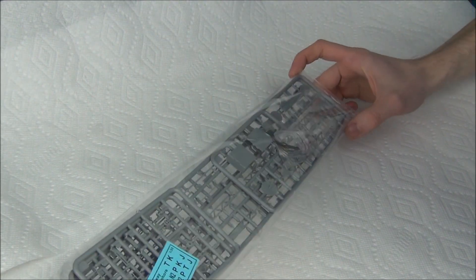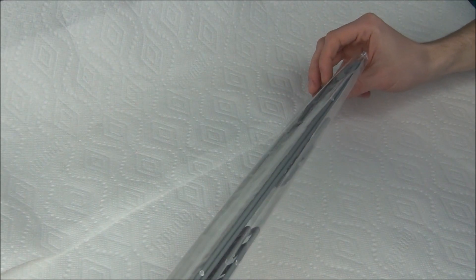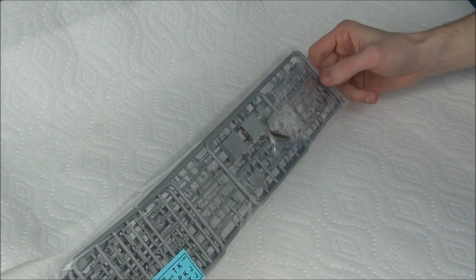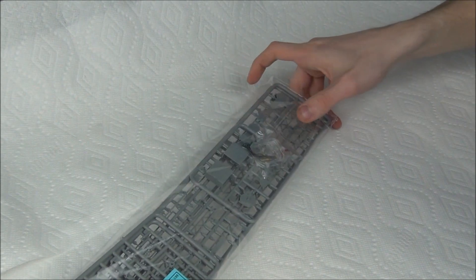Inside the box we only have one plastic bag containing everything. As you can see, there's only two big sprues and three smaller ones in there, as well as some clear parts and some decals.